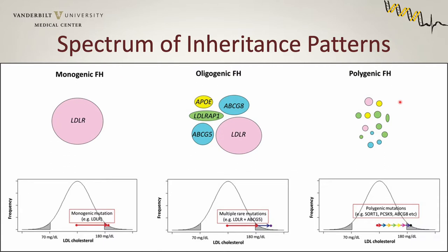At the other end of the spectrum is polygenic FH, where we have multiple variants in multiple genes, each of which individually has a relatively small effect, but when added up is enough to push a patient from a normal LDL cholesterol to above the threshold for disease. And then in the middle we have oligogenic FH — oligo meaning few, as opposed to one in monogenic or many in polygenic — where a handful of variants in different genes each has a fairly strong effect, and in combination, two variants are enough to push a patient from a normal LDL cholesterol to above the threshold for disease.